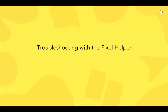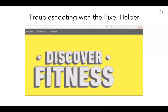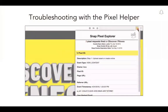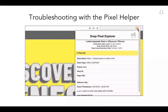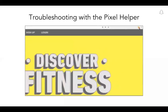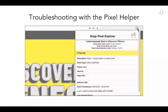Once you have installed the pixel and configured it to fire different events with all the different parameters, you might want to check if your pixel is set up correctly. We have built a Google Chrome extension called Snap Pixel Helper to help you check this. To use the Snap Pixel Helper, go to the Google Chrome Web Store and look for Snap Pixel Helper. Install it on your browser. Once the extension is successfully installed, you will be able to see a small Snapchat ghost icon on your browser. After configuring the Snap Pixel on your website, visit your website on the browser and click on the Snap Pixel Helper icon to confirm if the pixel is firing correctly. The Snap Pixel Helper will show you if your events are being fired correctly or if there are some errors that you need to fix.